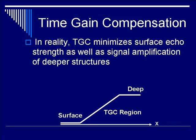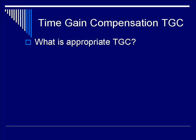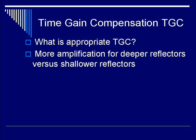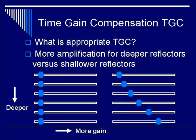At the surface and very deep in the body tissue, you do not really apply much gain. However, in between, you apply a constant slope — or a slope of your desire — that gives you the appropriate TGC compensation. Note that TGC is under operator control. In terms of the TGC slider bar seen on some machines, the vertical scale is depth — as you go down, you get deeper — and the horizontal scale is gain, where going to the right gives more gain. For a soft tissue situation, you want to turn up the gain for the deeper structures.